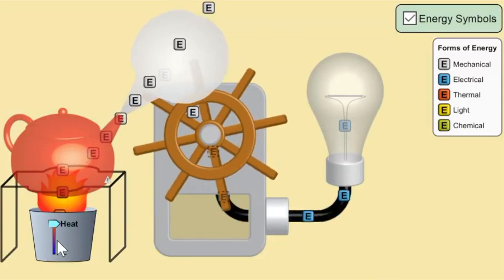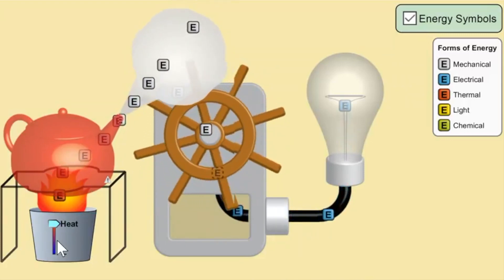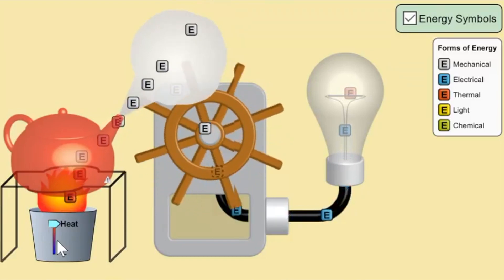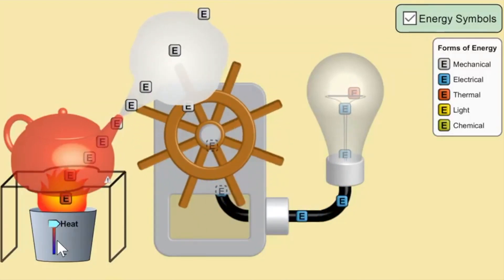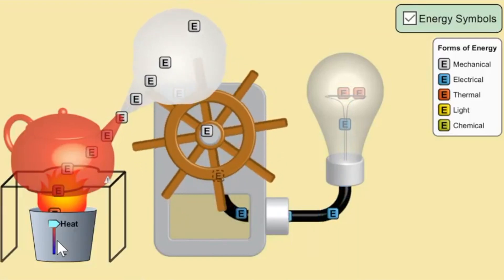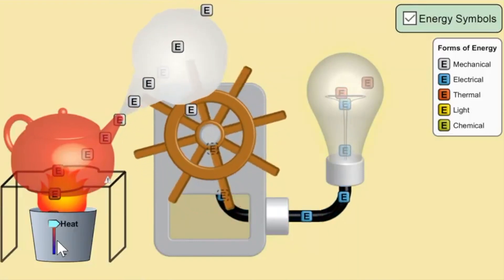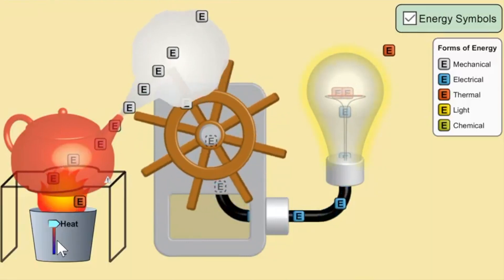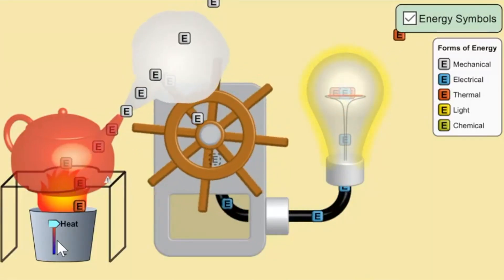Now that motion is attached to a generator, which is used to generate electricity. So you can see, going through the black wire below, that that is electrical energy going through that wire in the form of those blue E's. Now those blue E's make their way over to the light bulb, which at first you see red E's.